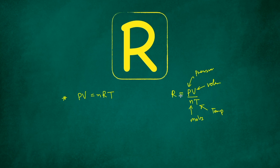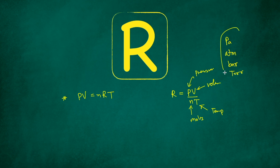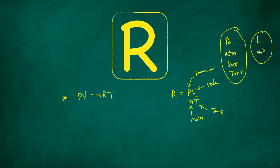Depending upon different values of pressure — we have Pascal, ATM, bar, torr, and many more — the value of R also changes. Similarly, for volume we have liters and meter cubed, and depending on that, the value of R changes again. Temperature is usually measured in Kelvin and moles remain in moles, so those two do not make much difference. It is the units of pressure and volume that play the major role.